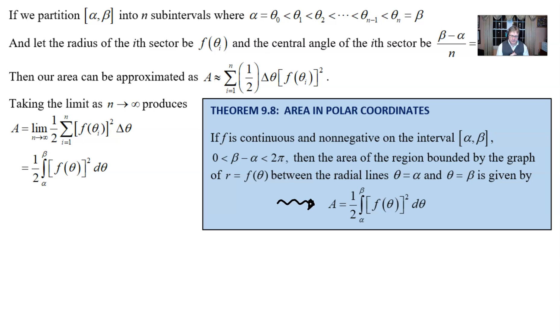One half times the integration from alpha to beta of f of theta, which is just the same as our r, squared with respect to theta. Not a whole lot to the formula. Fairly easy to remember. Fairly easy to work with. A lot of times you won't be integrating this by hand if the integrand is a bit complicated, but I want to know how do we come up with this polar formula.